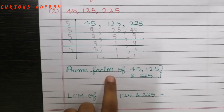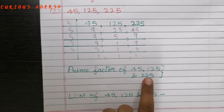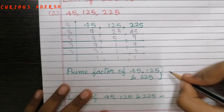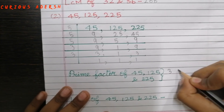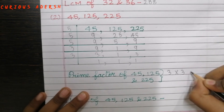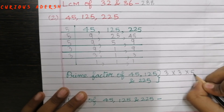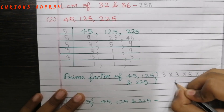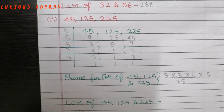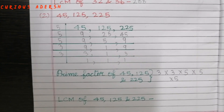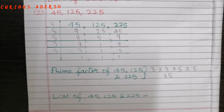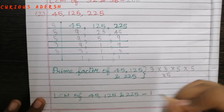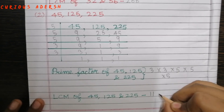Now the prime factors of 45, 125, and 225 are 3 x 3 x 5 x 5 x 5. So the LCM of 45, 125, and 225 is 1125.